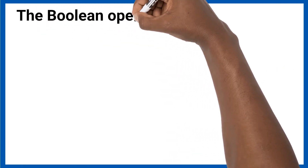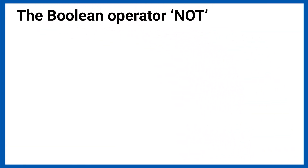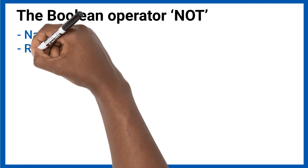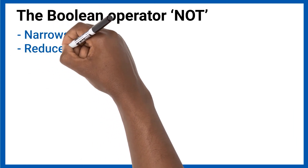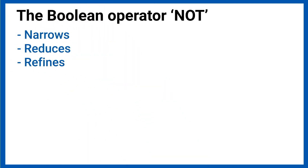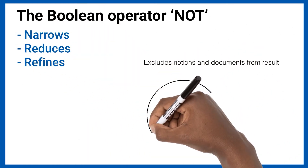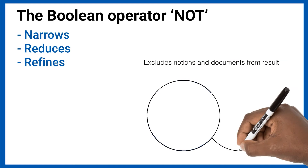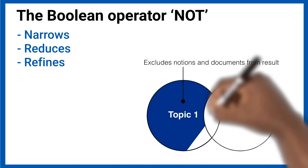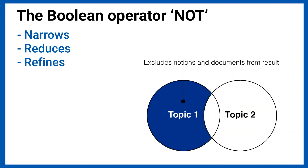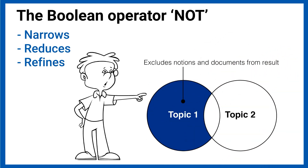The Boolean operator NOT narrows, reduces and refines search results. When using this operator, the search engine recognizes that it should not return documents with the keyword following the NOT. This allows users to eliminate documents that are regularly returned by the search engine but do not apply to their discussion.